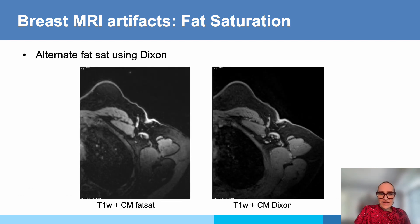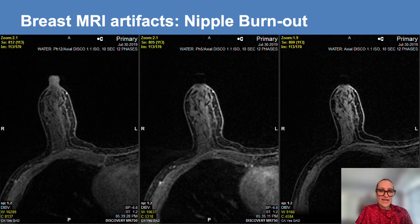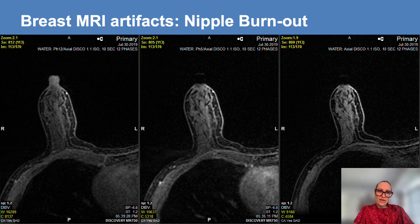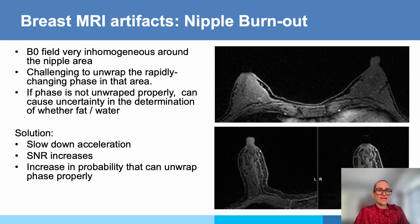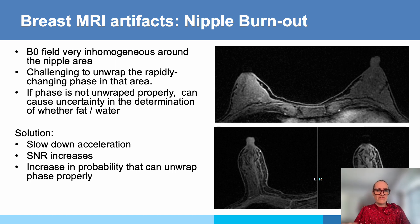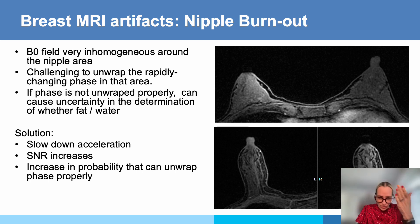An alternative method is Dixon fat saturation, which we currently use in our protocol. Two newer artifacts seen with high spatial and temporal resolution protocols are nipple burnout — where the patient definitely has a nipple but on the images it's gone. This predominantly happens in patients with prominent nipples. The B0 field is very inhomogeneous around the nipple area and it's challenging to unwrap rapidly changing phase in that area. Slowing acceleration increases SNR and increases the probability that the phase can be properly unwrapped.